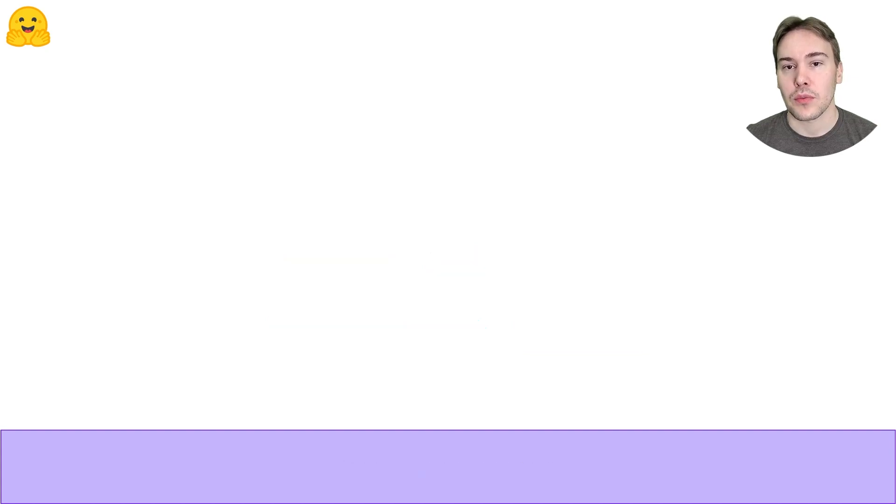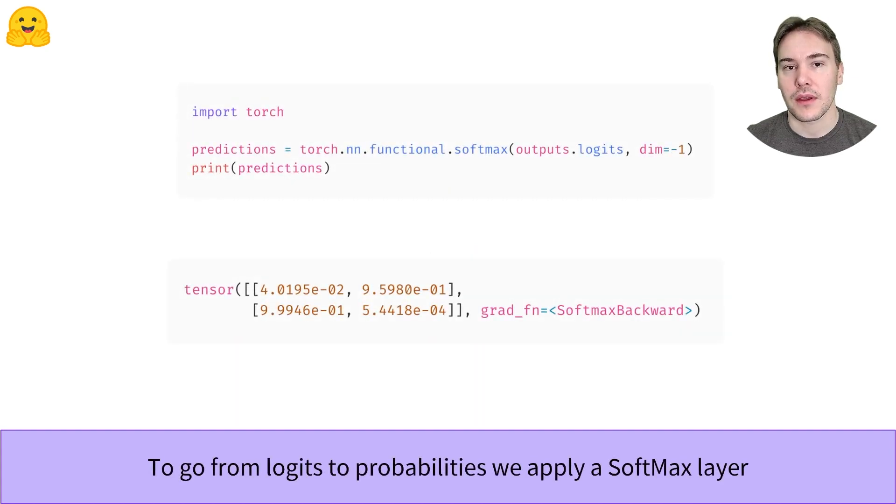To convert logits into probabilities, we need to apply a softmax layer to them. As we can see, this transforms them into positive numbers that sum up to one.